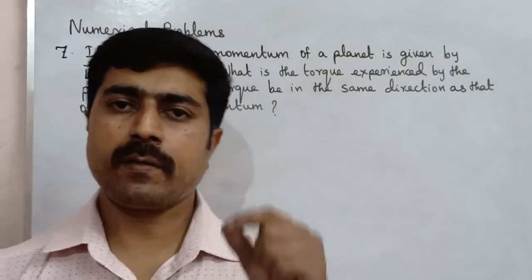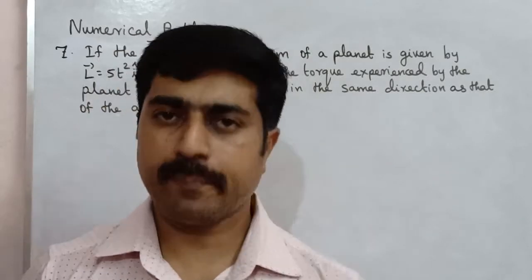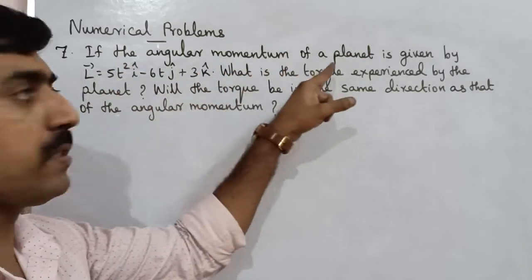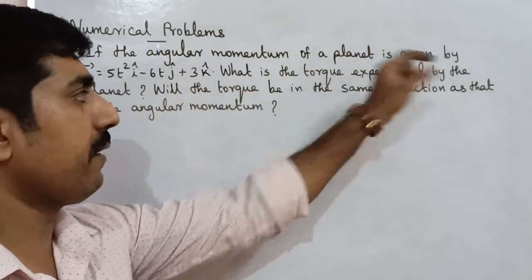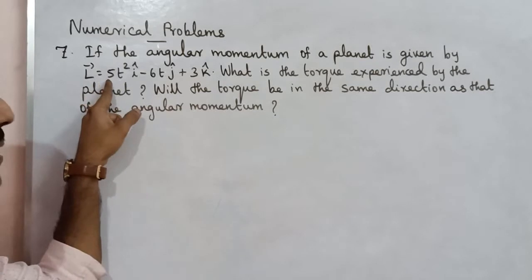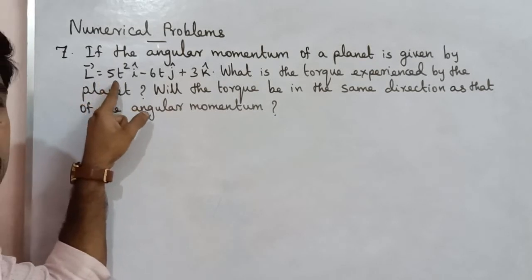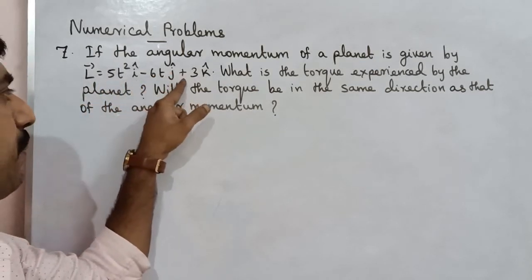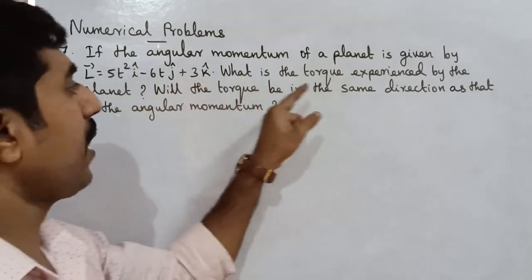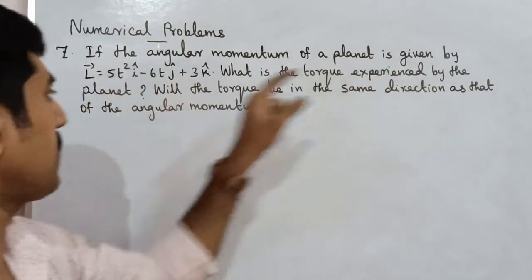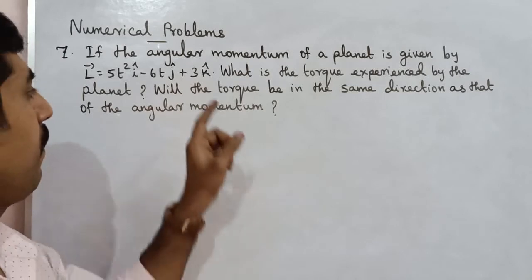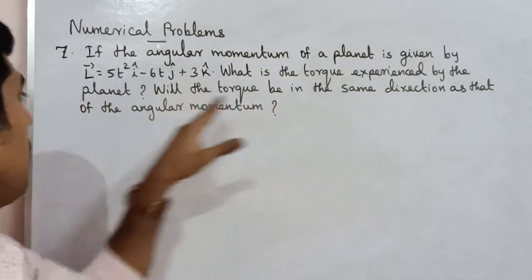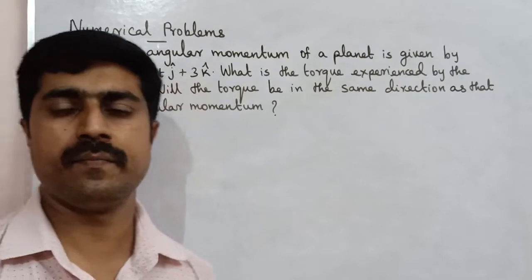Hi students. If the angular momentum of your planet is given by L-vector equal to 5t² î − 6t ĵ + 3k̂, what is the torque experienced by the planet? Will the torque be in the same direction as that of the angular momentum?